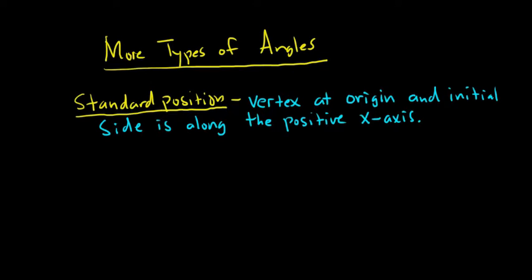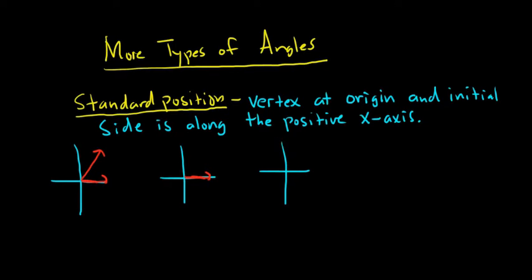Let's look at some pictures of angles in standard position. I'm going to use different colors for the sides, and we'll draw the angles. All of these angles are in standard position because you have the vertex at the origin in each case, and the initial side is along the positive x-axis.